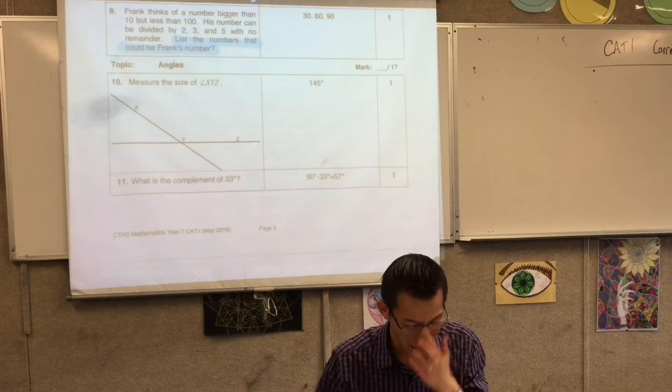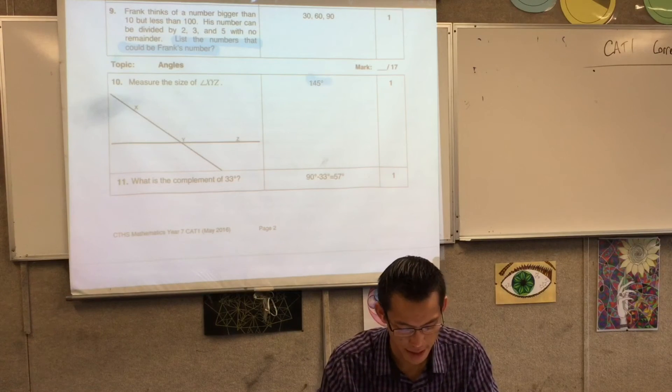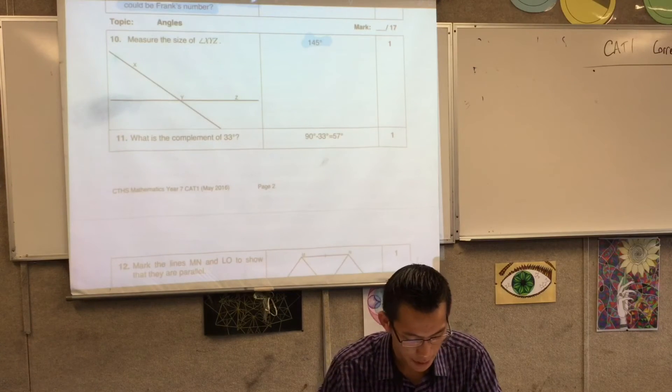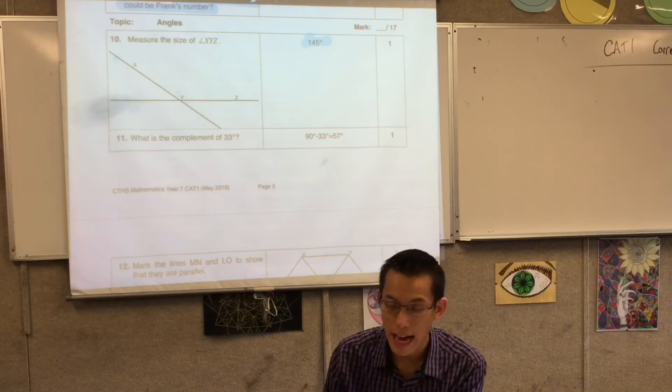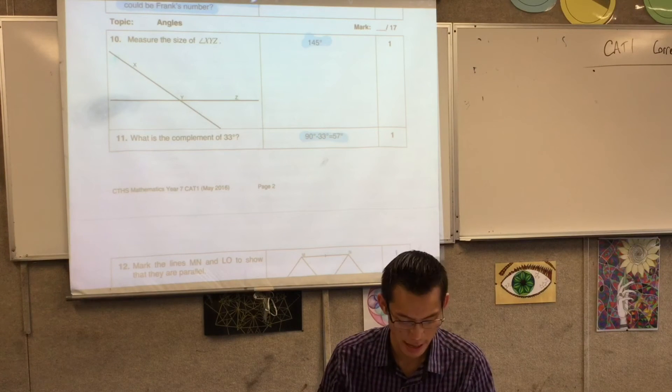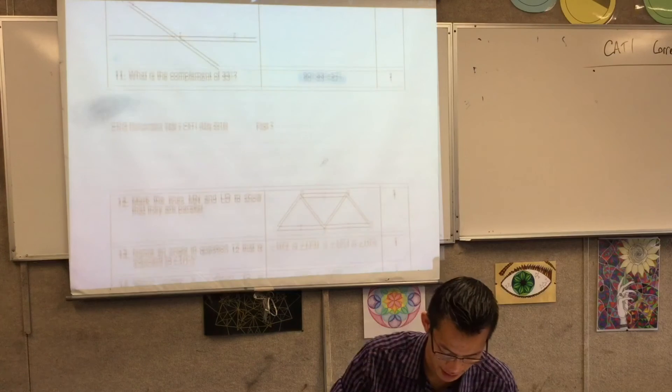Number 10. You just needed your protractor to make this measurement here. Number 11. The complement. So that's the difference between your angle and 90 degrees. So you can see the subtraction there. And let's turn over the page.